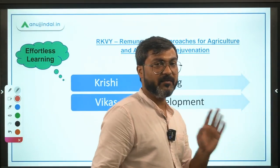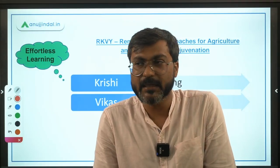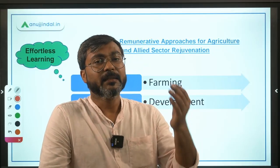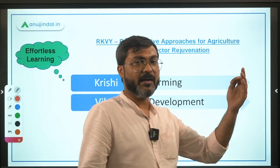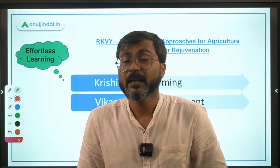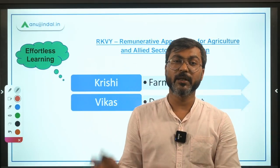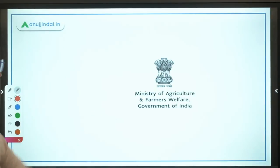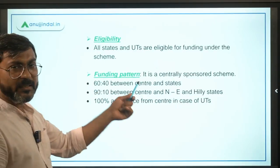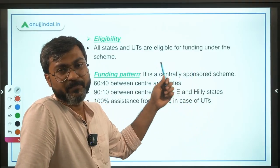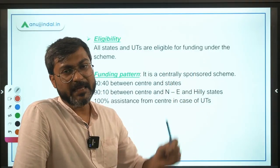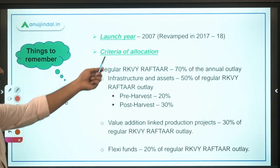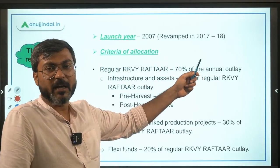Let's revise once again. The objective is development in agriculture and allied sectors — done by enhancing productivity and production. The central government incentivizes state governments for investment and ensures each state has a state agricultural plan. It is implemented by the Ministry of Agriculture and Farmers Welfare. All states and UTs are eligible. Funding pattern: 60:40, 90:10, 100% for UTs. Launched in 2007, revamped in 2017-18.